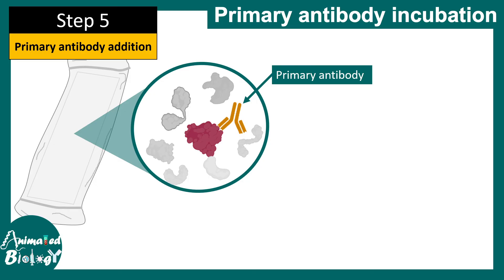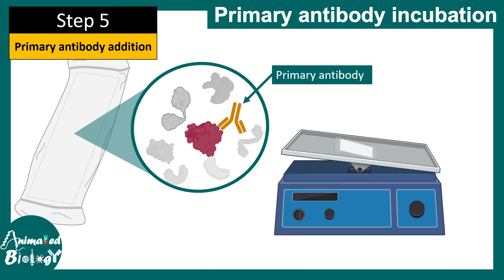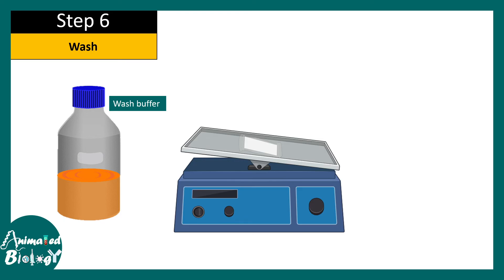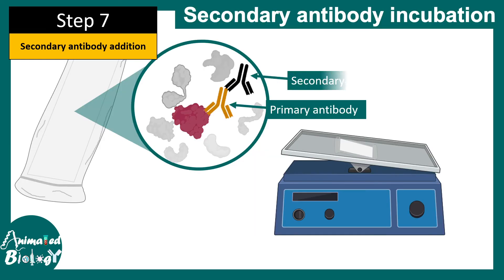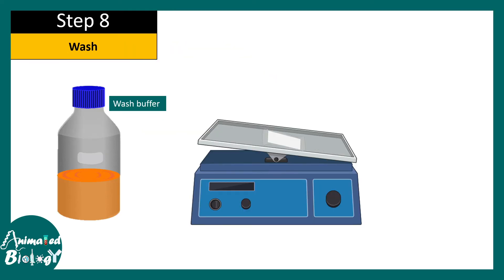A primary antibody is then added to detect whether our protein of interest is present or not. If the protein is present, the primary antibody should detect it; if not, it should give no signal. The membrane is kept overnight at 4°C with shaking. The next day, a washing step removes all non-specifically bound antibodies. Then a secondary antibody is added, which binds to the back of the primary antibody. If the protein was there, the primary antibody is there, and the secondary antibody will detect it. Further washing steps remove any non-specifically bound secondary antibodies.